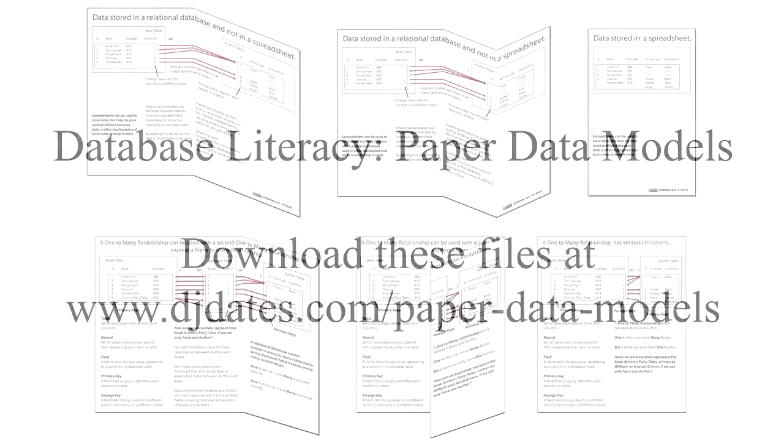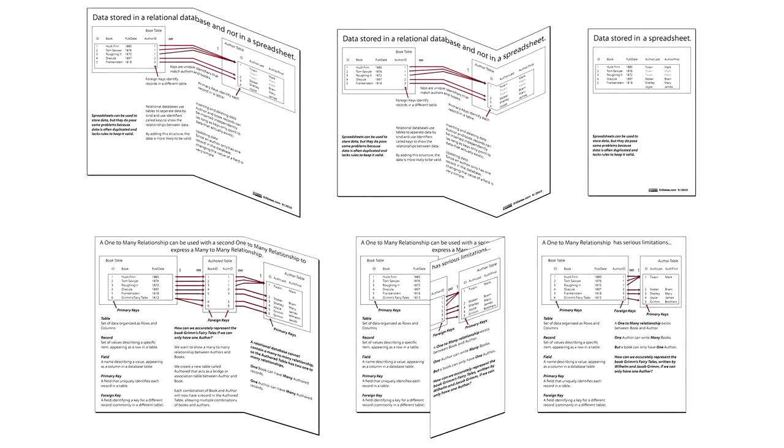The two paper data models use data about books and authors to demonstrate a flat file database, a one-to-many database relationship, and a many-to-many database relationship.